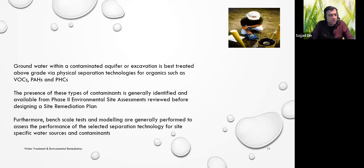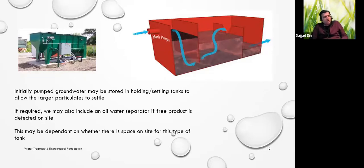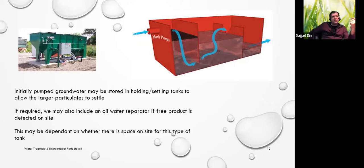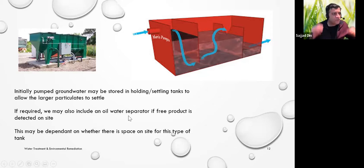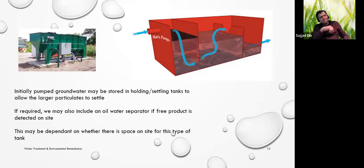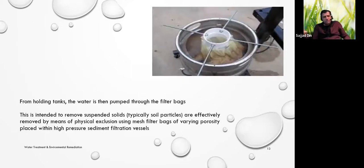When we have groundwater contamination or contaminated water at a construction site, we like to store it in a holding tank or settling tank. The purpose is to reduce the amount of suspended solids — if you let it sit for 24 hours, solids settle out. There are also situations with chemical contaminants like organics that need to be removed using an oil-water separator, which can remove oil because it's in a different phase.